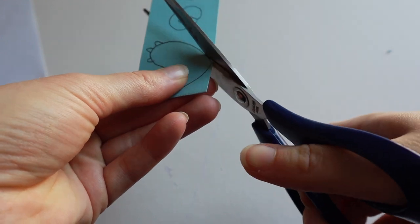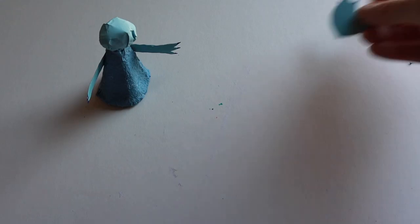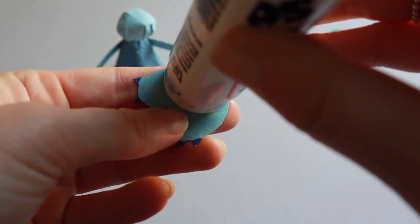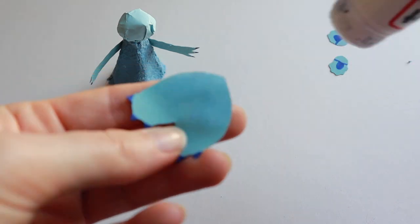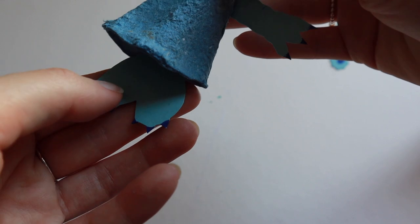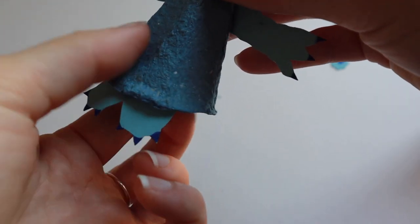Cut out your shapes, then add whatever details you want to. Put some glue on the bottom of your heart shape and fix it to the inside of your body. Press firmly.